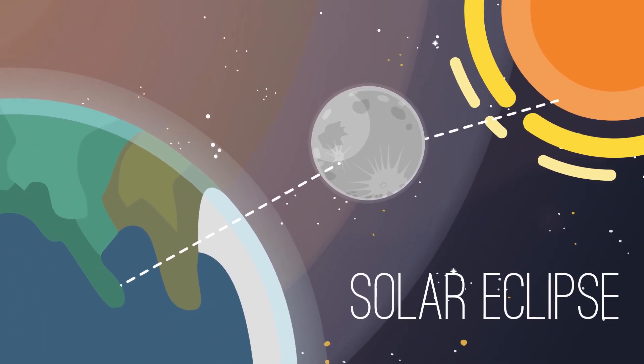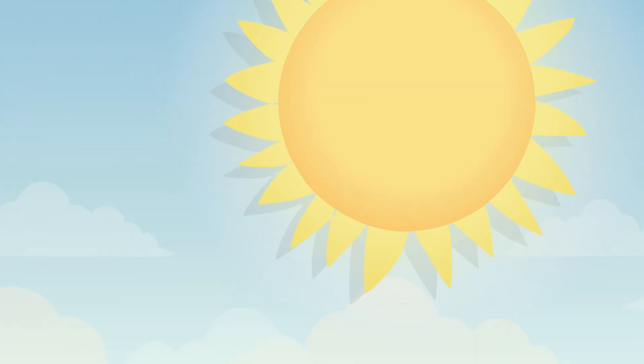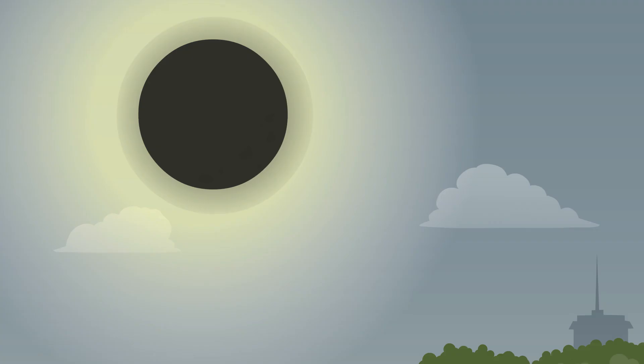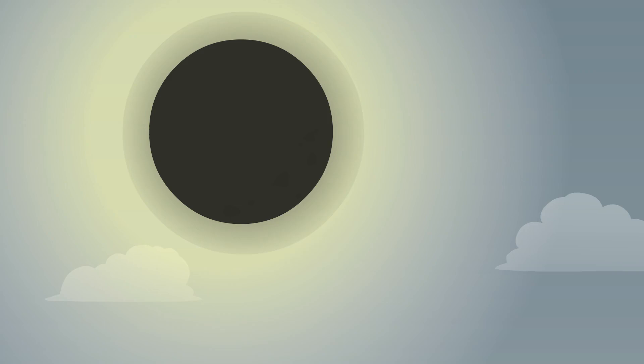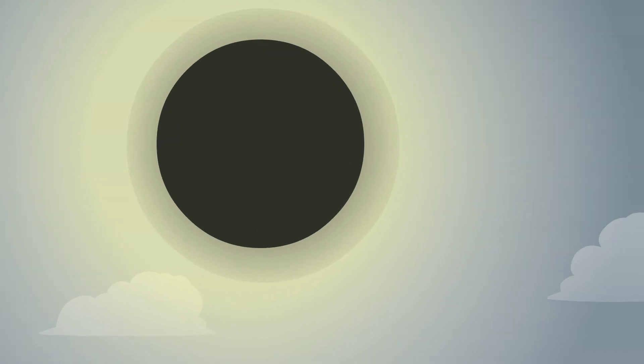It's like a celestial game of peek-a-boo. During the day, the sun lights up the sky, but when a solar eclipse occurs, it's as if the moon is playing hide-and-seek, temporarily blocking the sun's light.